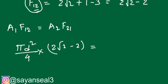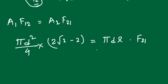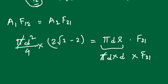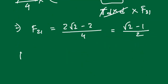So (πD²/4) × (2√2 − 2) = πD² × F21. Cancelling πD² from both sides gives F21 = (2√2 − 2) / 4 = (√2 − 1) / 2. So the answer is F21 = (√2 − 1) / 2.